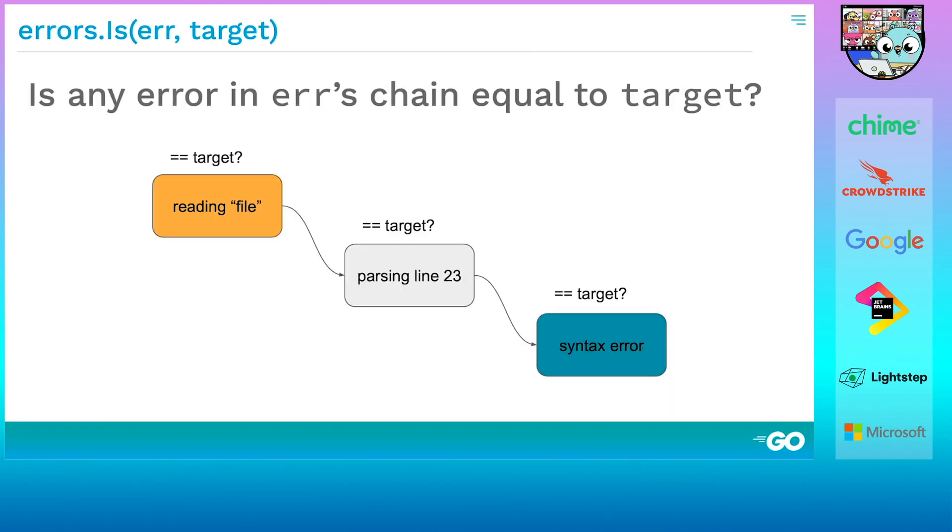We now come to the first of three new functions in the errors package. Unwrap is just a convenience function that calls an error's unwrap method if it has one, and returns nil if it doesn't. Next up, errors.is, which you've already met. It's meant to replace the common case of testing errors for equality. It walks the error chain, comparing each error it encounters with the error that the caller is looking for. If any of them are equal, it returns true.